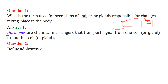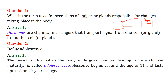Define adolescence. When we are born, after a certain age our body prepares us for reproduction. The period of life when the body undergoes changes which lead to reproductive maturity is known as adolescence.